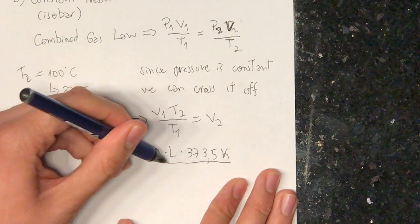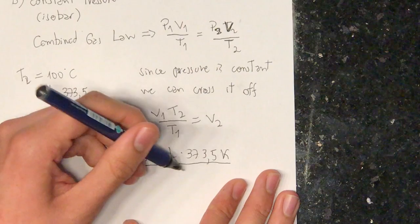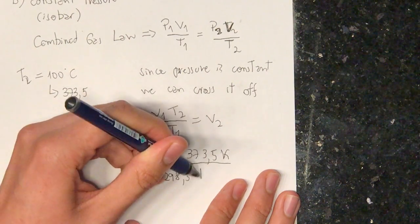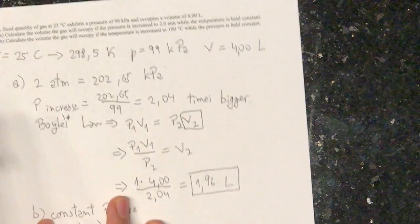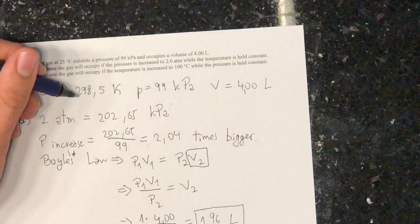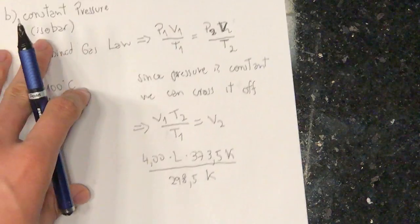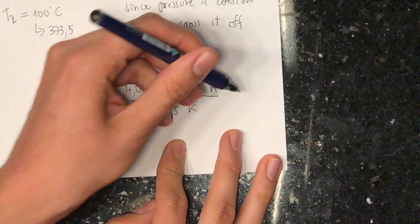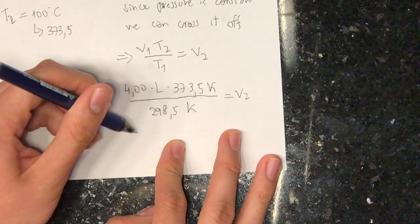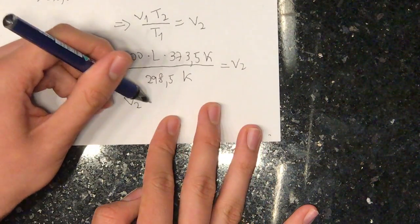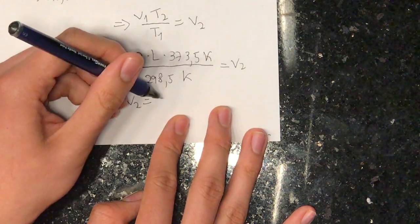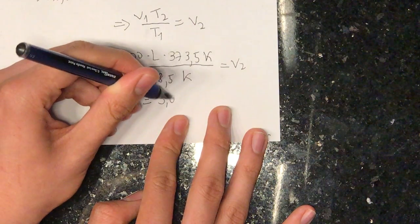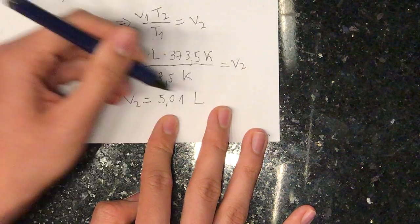Divided by temperature 1, which is 298.5 Kelvin, which we have from the beginning of the exercise here. And then we get that our volume 2 is equal to 5.01 liters.